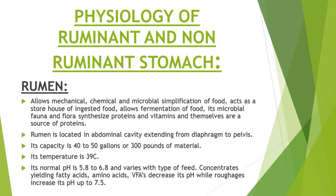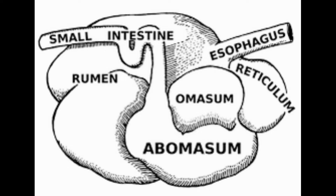Before starting our topic you should know that the ruminant stomach is composed of four compartments. The first compartment is the rumen, then reticulum. Third compartment is omasum and fourth compartment is abomasum, and these four compartments unite and combine to form the whole complex stomach of the ruminants.